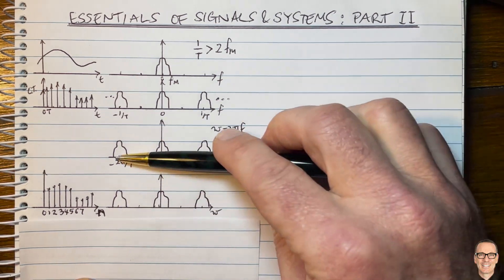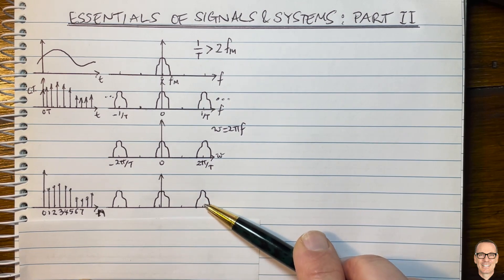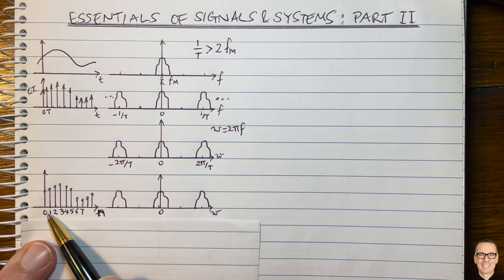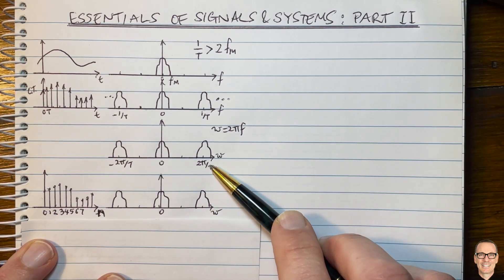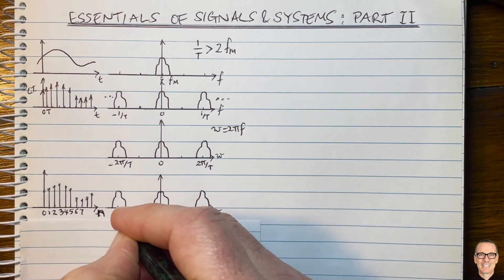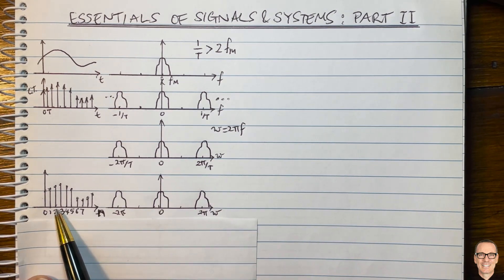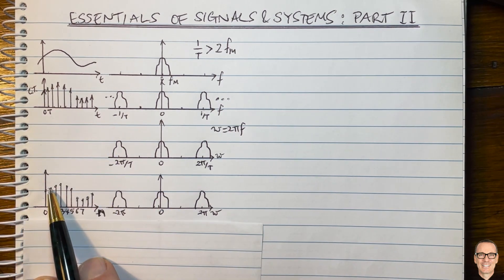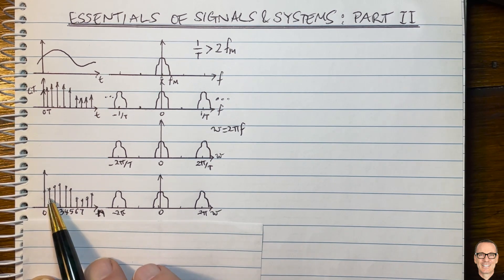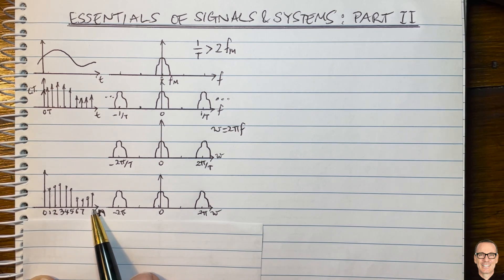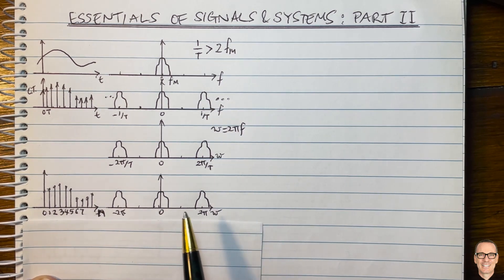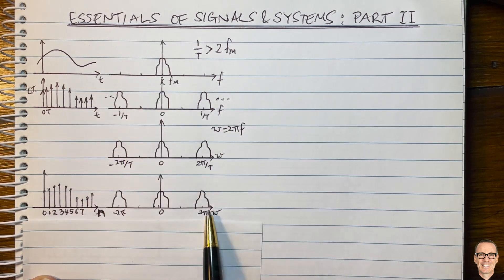We call these the continuous time frequencies and the discrete time frequencies, and the scaling can be thought of as sampling with a rate of capital T equals 1. So the copies appear at 2 pi and minus 2 pi. In discrete time, you have well-defined functions — not impulses with arrows — that have exactly the value of their height, indexed by integers. All discrete time signals have copies at 2 pi: that's another essential property to know.